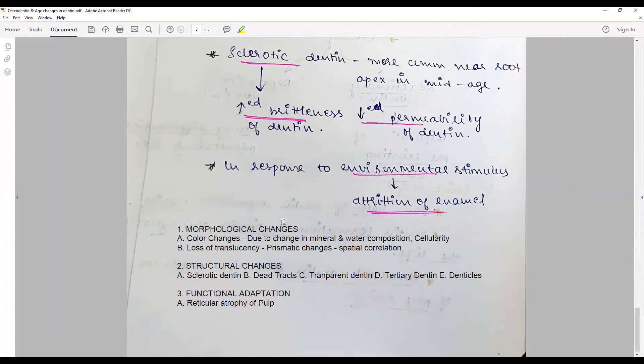Not only that, the cellularity changes—it becomes more fibers and less cellular with age. That causes a change in the spatial correlations of the fibers. Loss of translucency is because of the hydroxyapatite crystals.